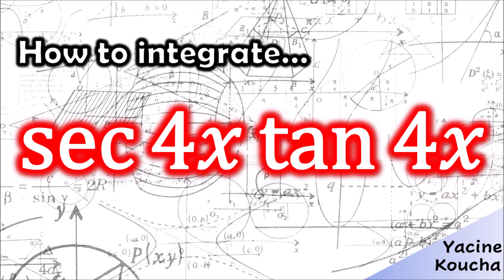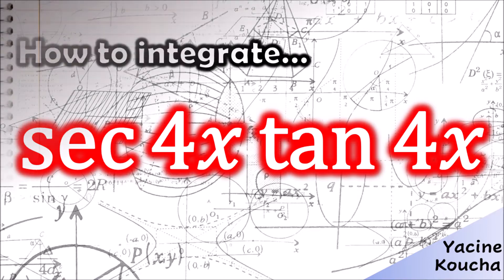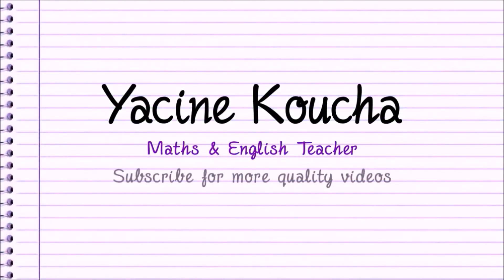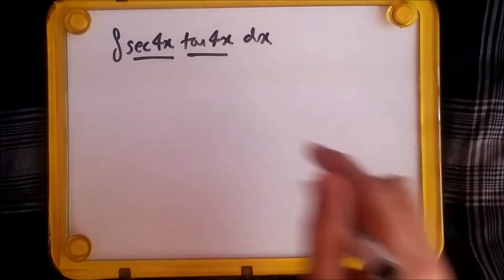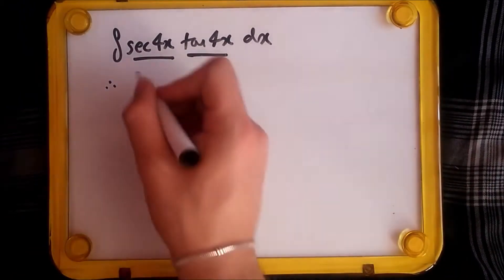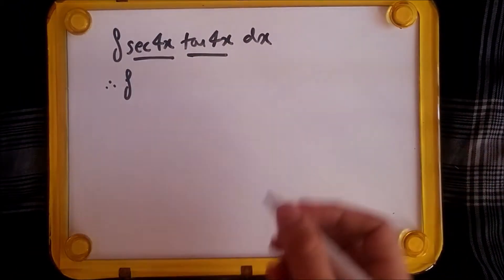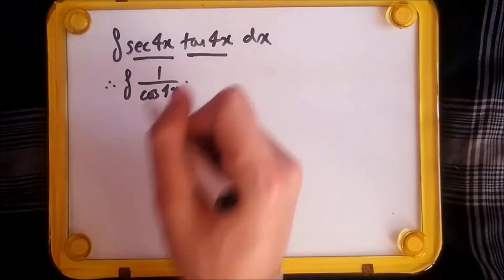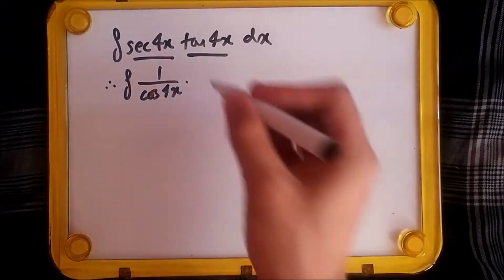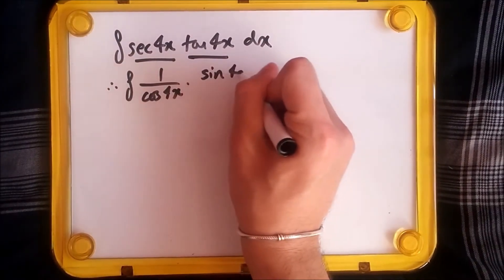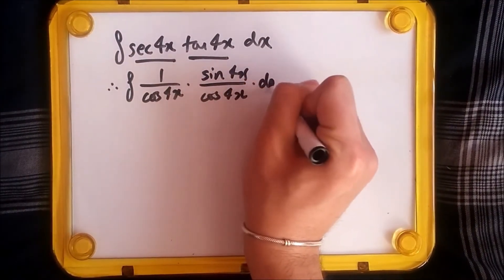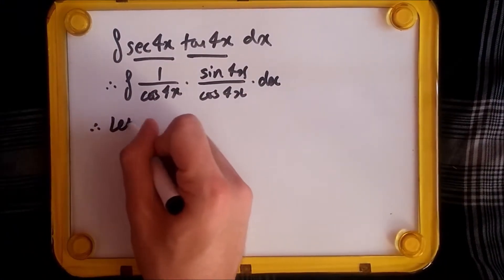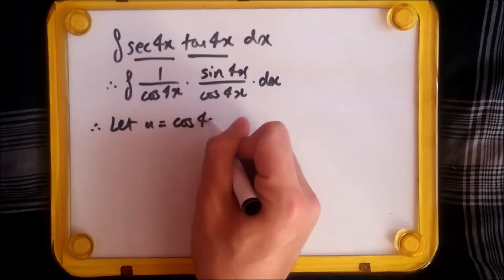Let me show you how I would personally break it down. The first thing you want to do is rewrite sec and tan in terms of sine and cosine. So here we can rewrite sec as 1/cos(4x), since that's the identity, and tan as sin(4x)/cos(4x). Don't forget to put 4x on both. Next, let u equal the term in the denominator, which is cos(4x).